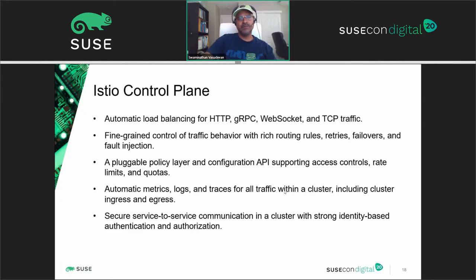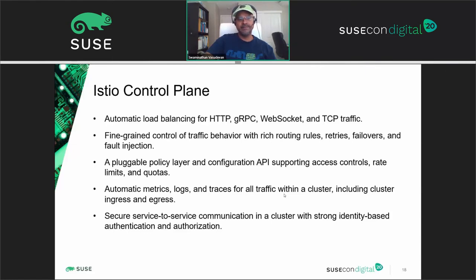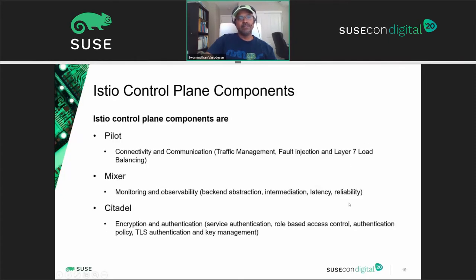Istio provides automatic load balancing for HTTP, gRPC, WebSocket, and TCP traffic. You can fine-grain traffic behavior with rules, retries, failovers, and fault injection. You can provide access controls, rate limits, and quotas. You can get metrics, logs, and traces for all traffic within a cluster. And you can secure service-to-service communication in the cluster.